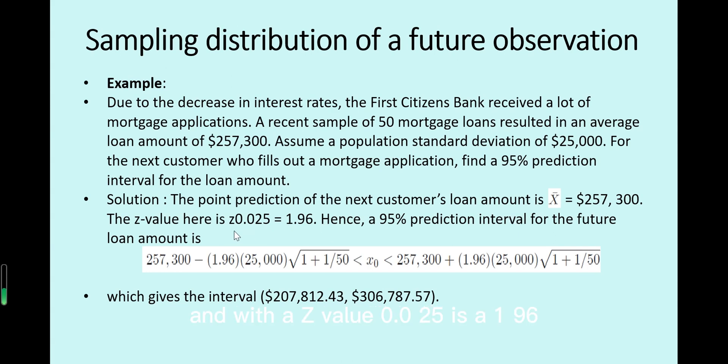So here we just fill in x̄, and with the z-value 0.025 is 1.96 for standard normal distribution. So fill in these values in the previous formula, we can get about the lower bound is $207,000, and upper bound is $306,000, this prediction interval for a future customer's mortgage value.